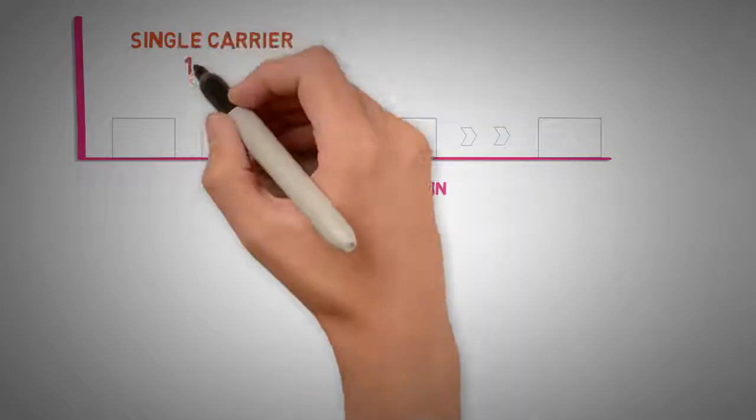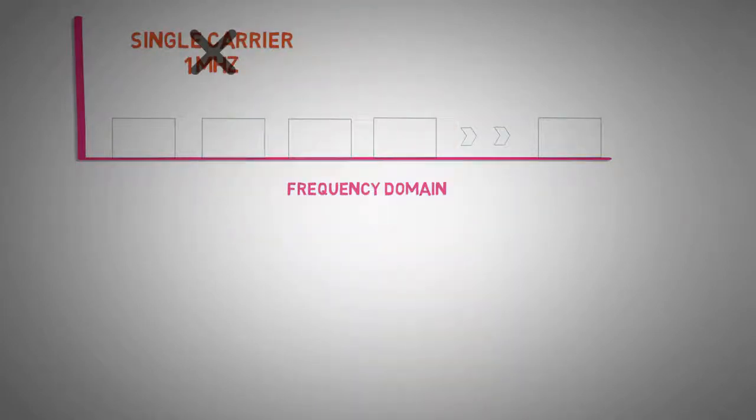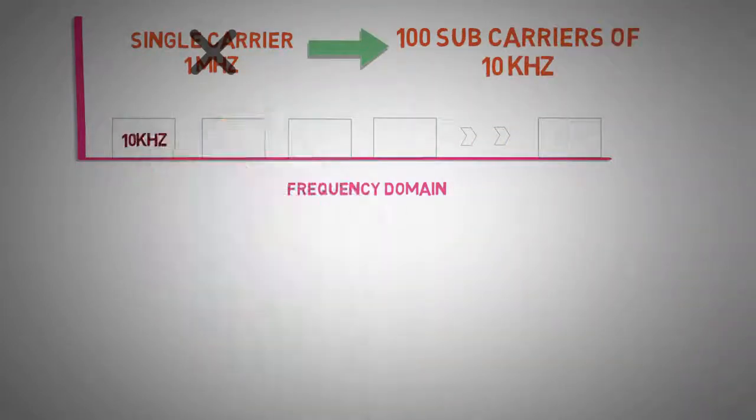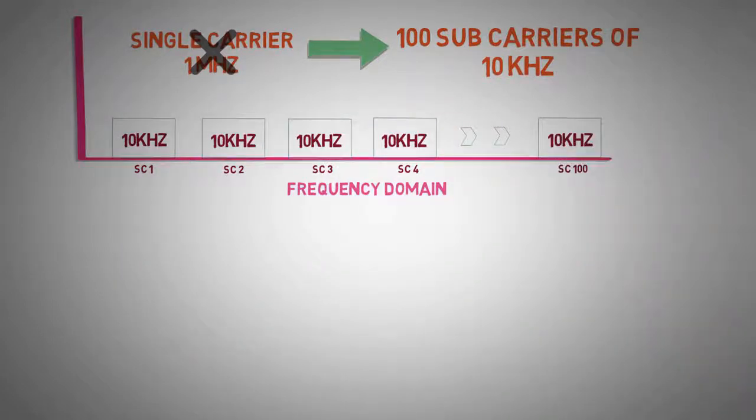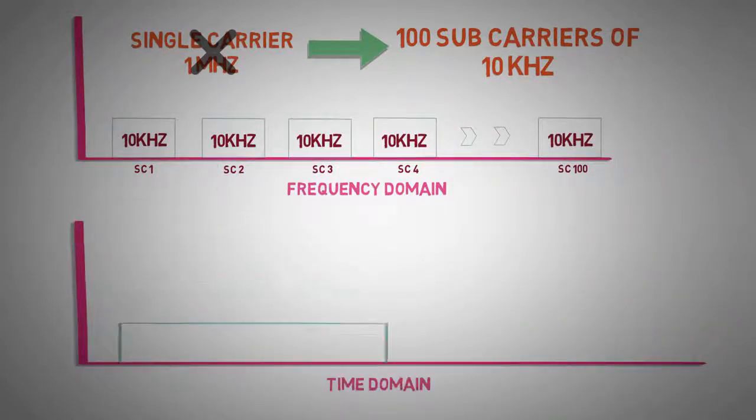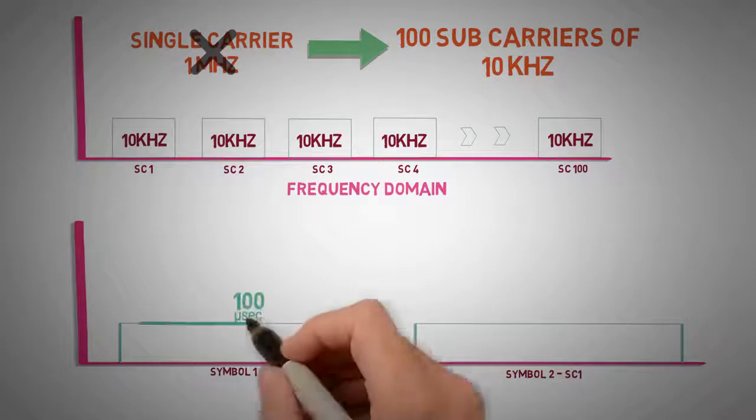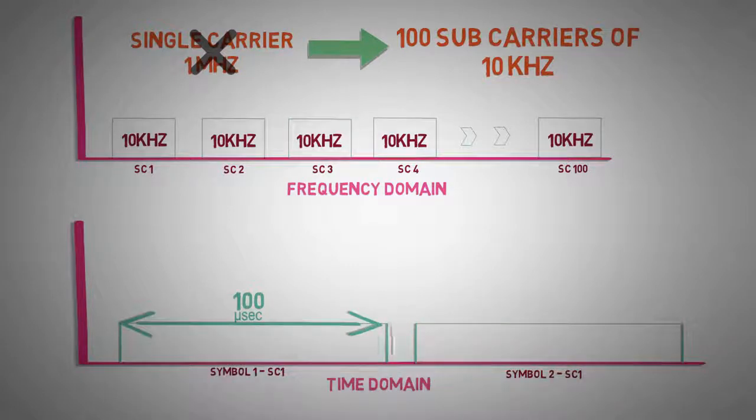So instead of having a single carrier of 1 MHz, we divide it into 100 sub-carriers of 10 kHz, each having a symbol duration of 100 microseconds. So a delay spread of 2 microseconds will have a negligible effect over the channel efficiency.